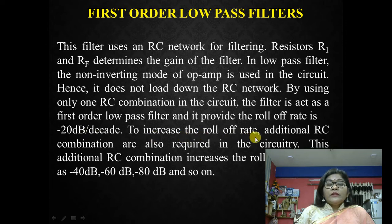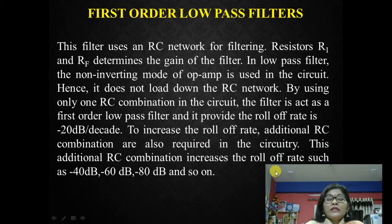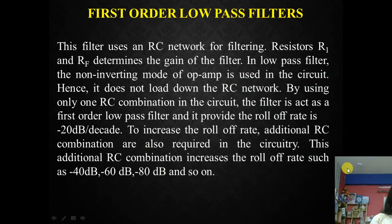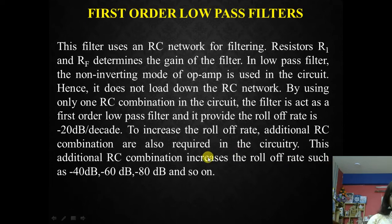To increase the roll-off rate, additional RC combinations are also required in the circuit. This additional RC combination increases the roll-off rate such as minus 40 dB, minus 60 dB, and so on. The rate at which the response falls off is called the roll-off rate, and it is decided by the order of the filter. If we increase the filter order by 1, the roll-off rate increases by 20 dB per decade. Thus the filter complexity increases with increase in filter order, but the frequency response becomes sharper.